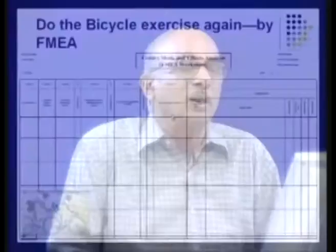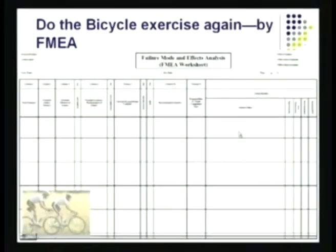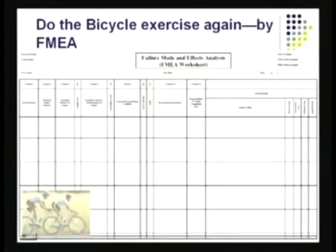Try going back to the bicycle problem — we did an FTA on your bicycle. This time try to do an FMEA on the bicycle as a total system. And a question to consider: as far as reliability goes, are the two wheels of the bicycle in parallel or in series? Please try to figure out the answer.